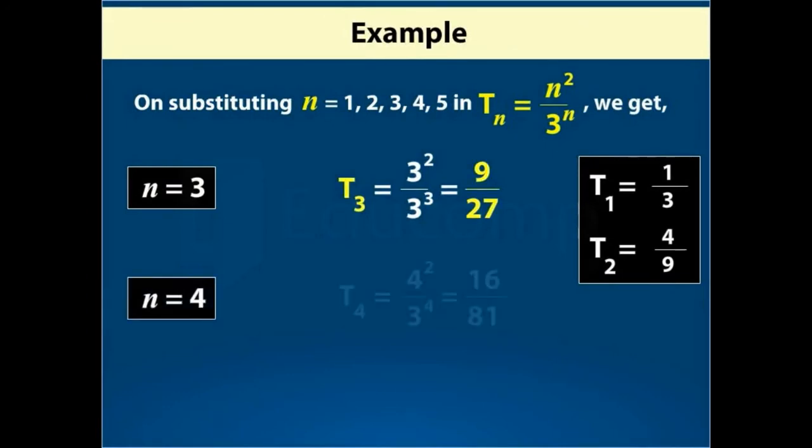For n equal to 4, T4 is equal to 16 over 81.